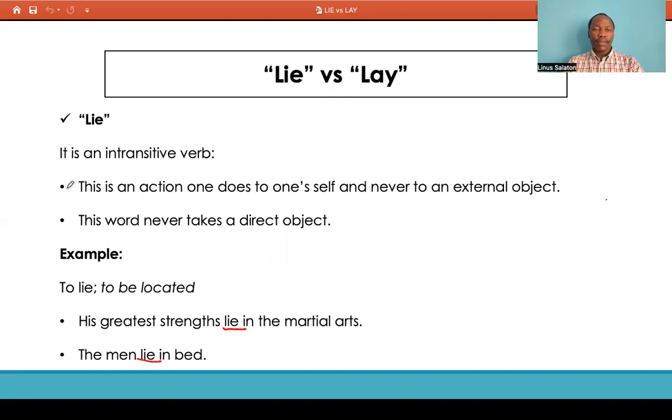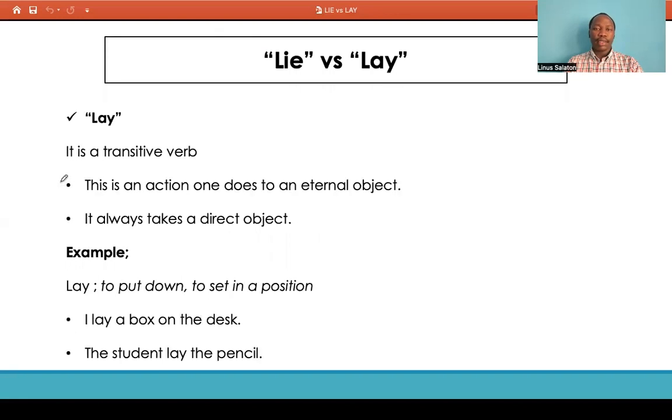Have that clear in your mind, then compare that with the meaning of lay, which is a transitive verb. That is an action that one does to an external object. It always takes a direct object. For example, you put down something, you're referring to that action as lay down a pen, lay down a book, or to set in a position.